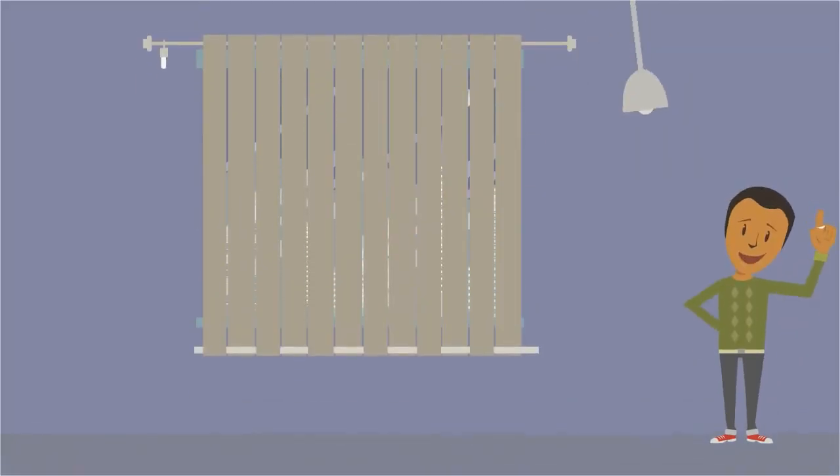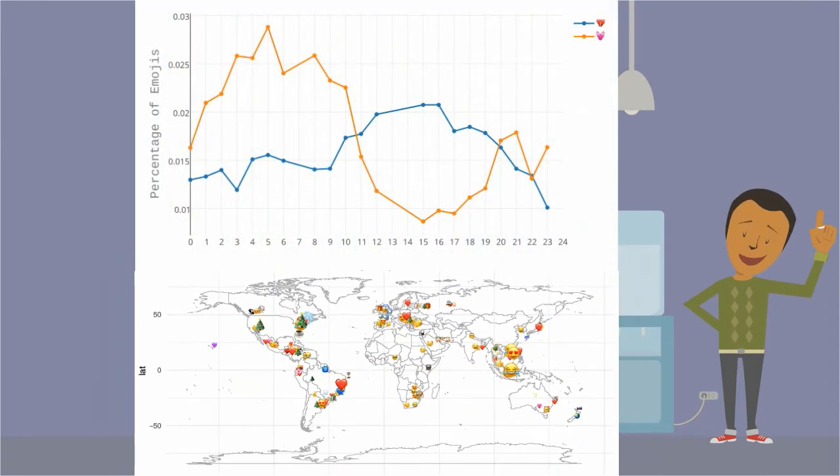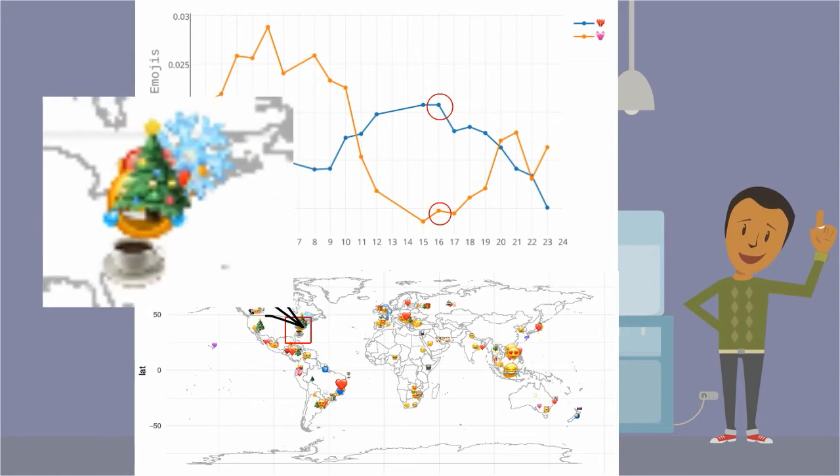Since emojis can indicate someone's mood, we also wondered if emojis could indicate someone's circumstance. We used a temporal and geospatial analysis to define people's circumstances. We found that the popularity of different emojis varied throughout the day. We also found the emojis people were using reflect events occurring at a given location.